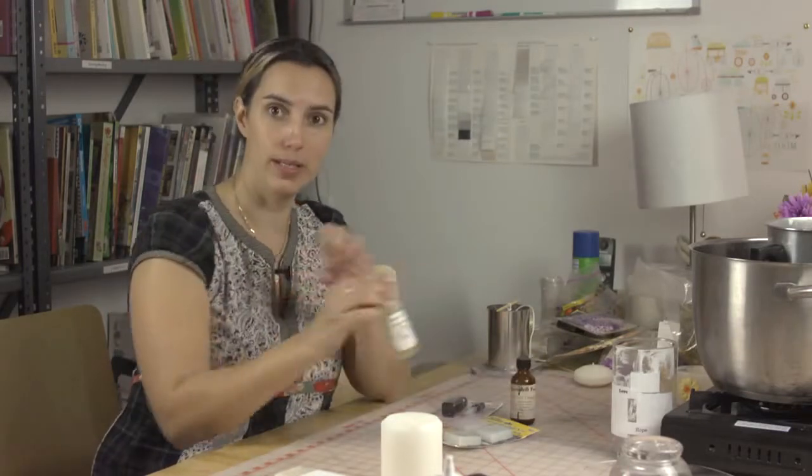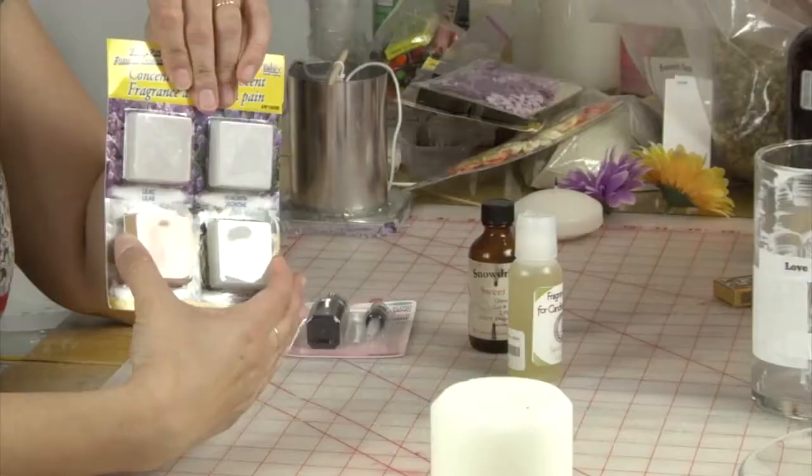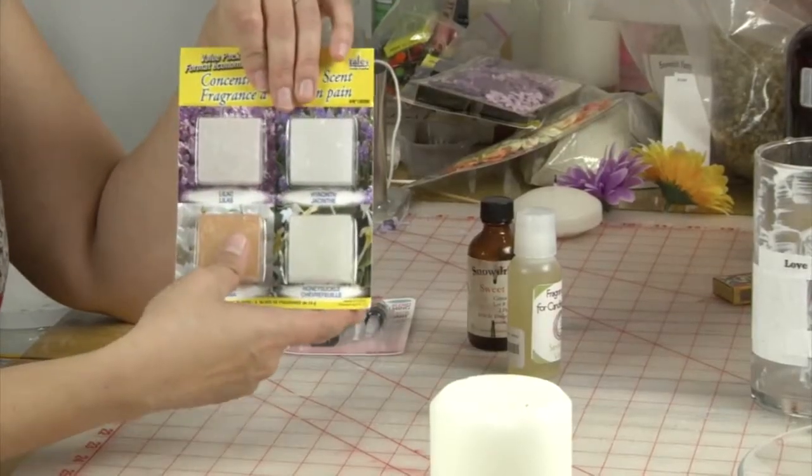There's a couple different ways to scent your candles. One is a liquid essential oil blend, and another is a solid wax blend that's already been pre-scented that you just drop in with your wax when you melt it.